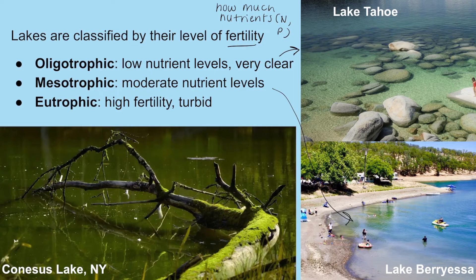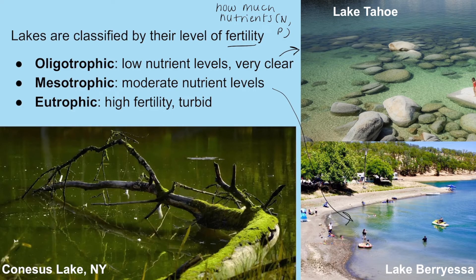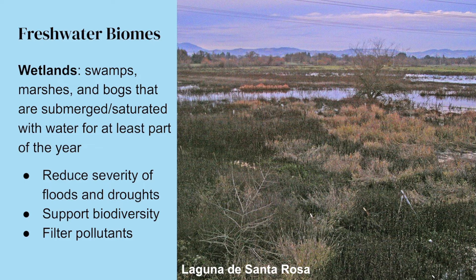More lakes are becoming eutrophic because of human activity. Humans bring in chemicals from sunscreens and other activities released into lakes. We also use a lot more fertilizers — if that fertilizer runs off into a lake, it adds more nutrients. Runoff from urban areas and cities can also bring more nutrients into these lakes, causing them to become closer to eutrophic or mesotrophic.